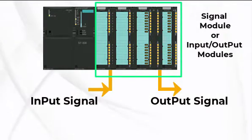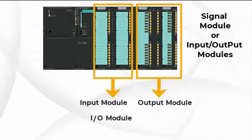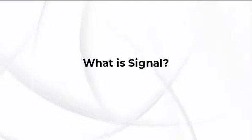Remember that signal modules are also called I.O. modules and here I means input and O means output. Before discussing PLC's input and output module we need to talk about the types of signals used in electrical devices. What is a signal?